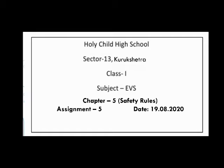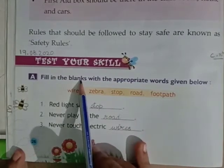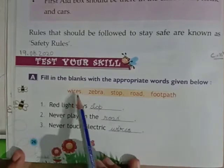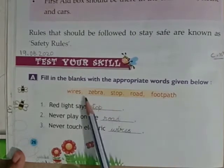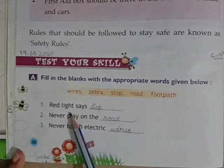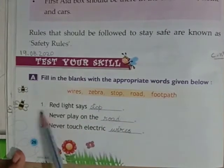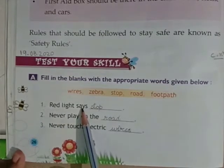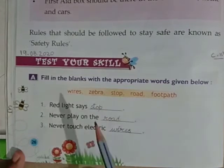Question A: Fill in the blanks with the appropriate words given below. Choose the words from the box and complete the fill-in-the-blanks. First sentence: Red light says — red light says stop, so we write 'stop'.